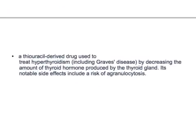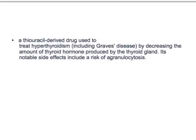Propylthiouracil is a thiouracil-derived drug used to treat hyperthyroidism, including Graves' disease, by decreasing the amount of thyroid hormone produced by the thyroid gland. Its notable side effects include the risk of agranulocytosis.